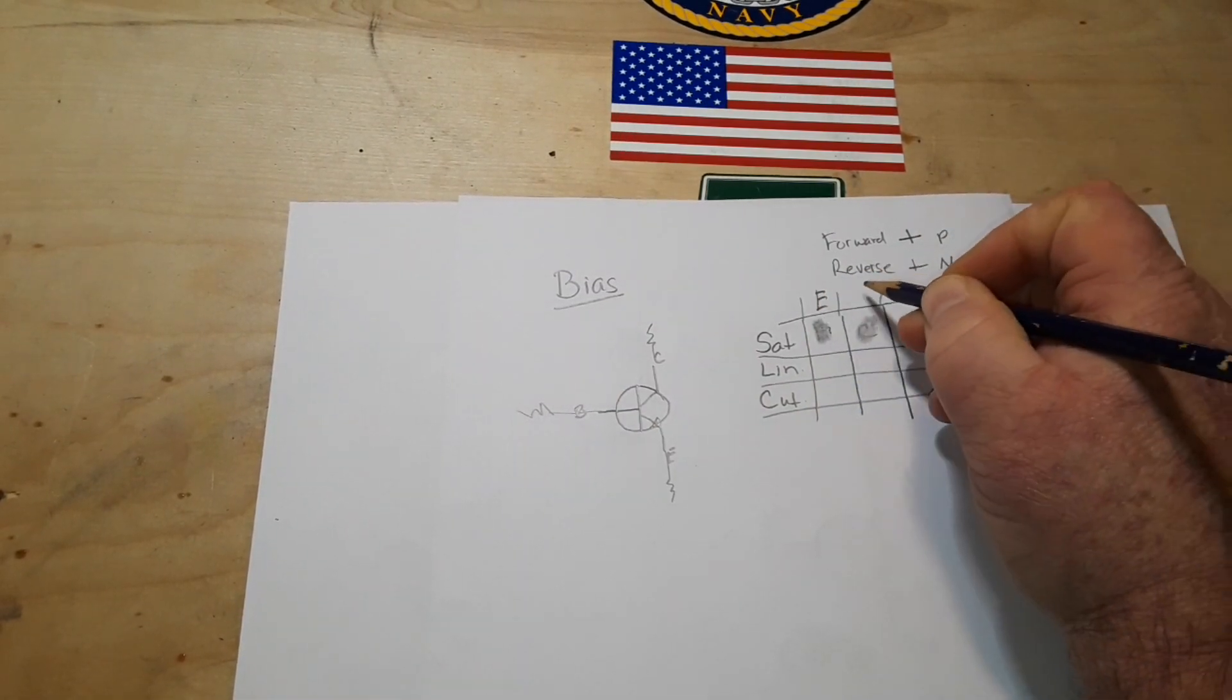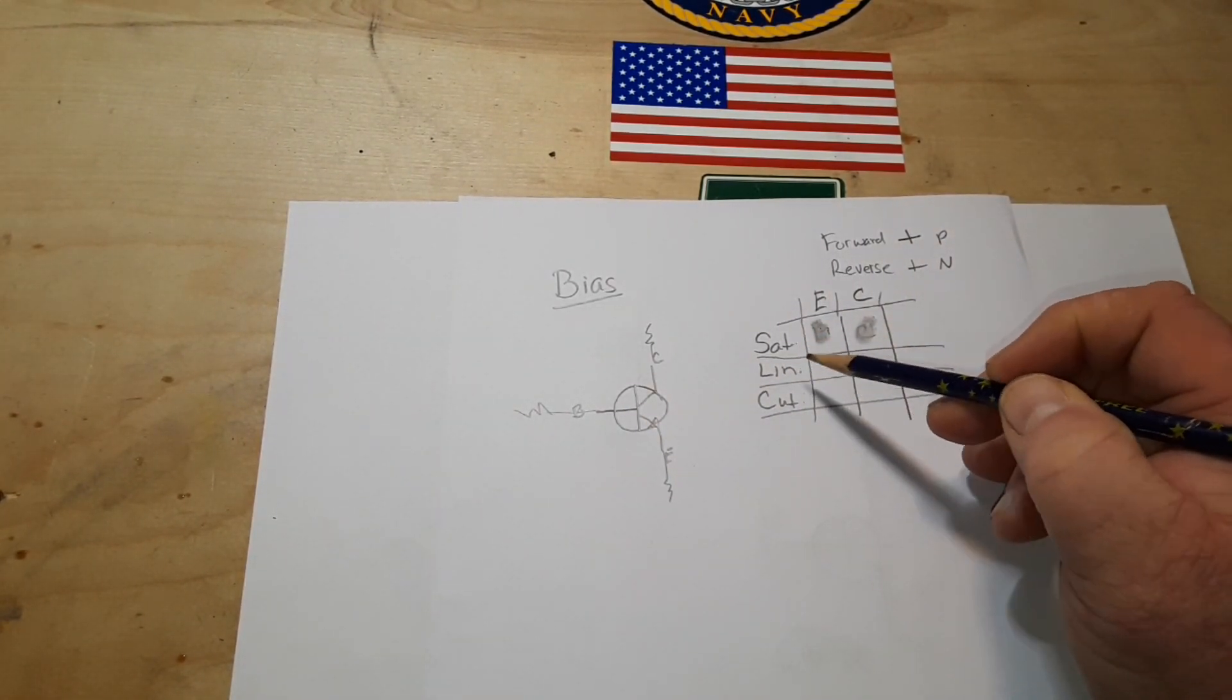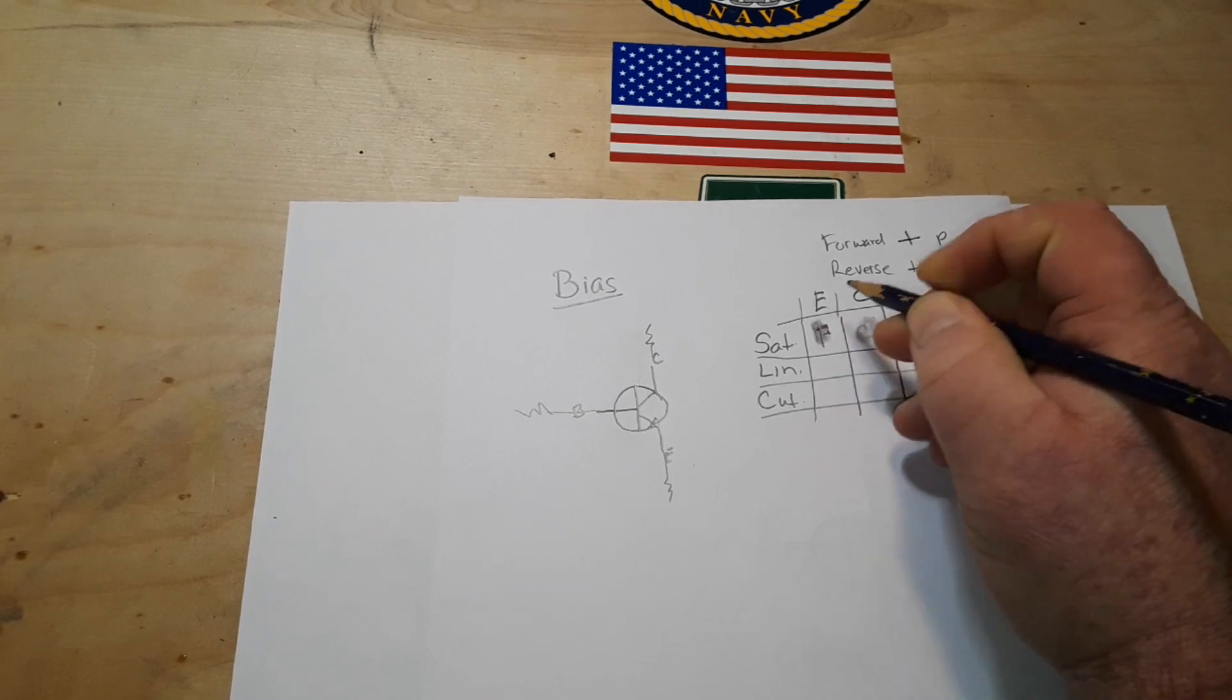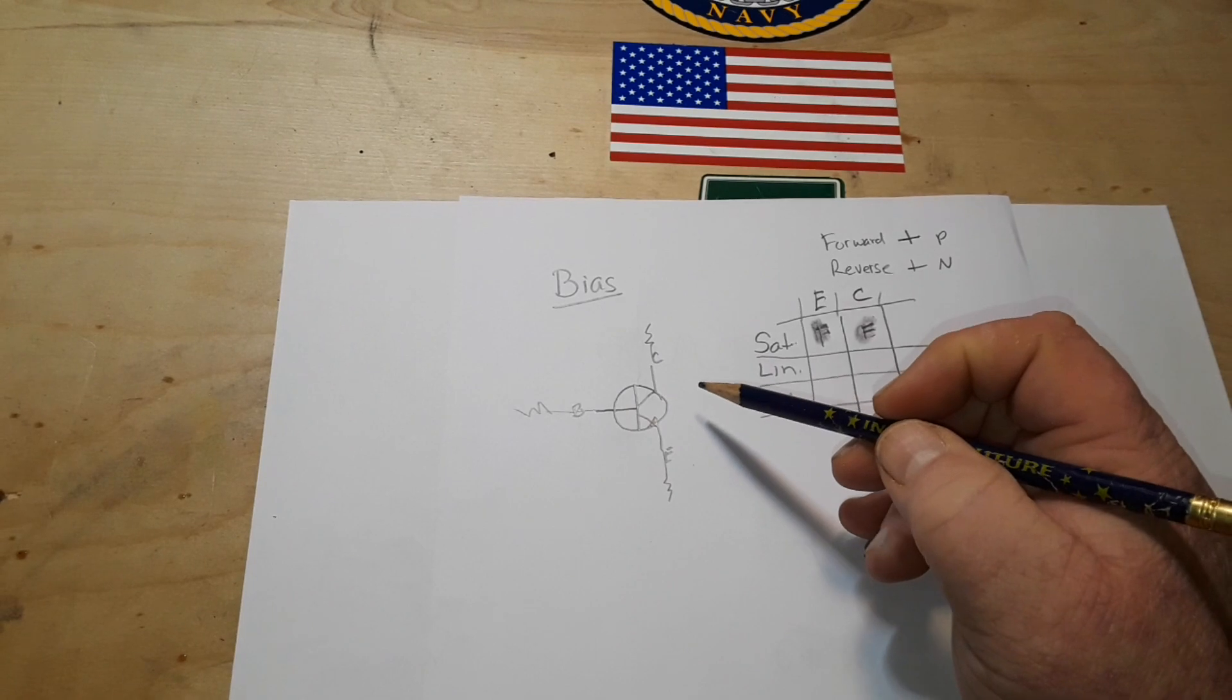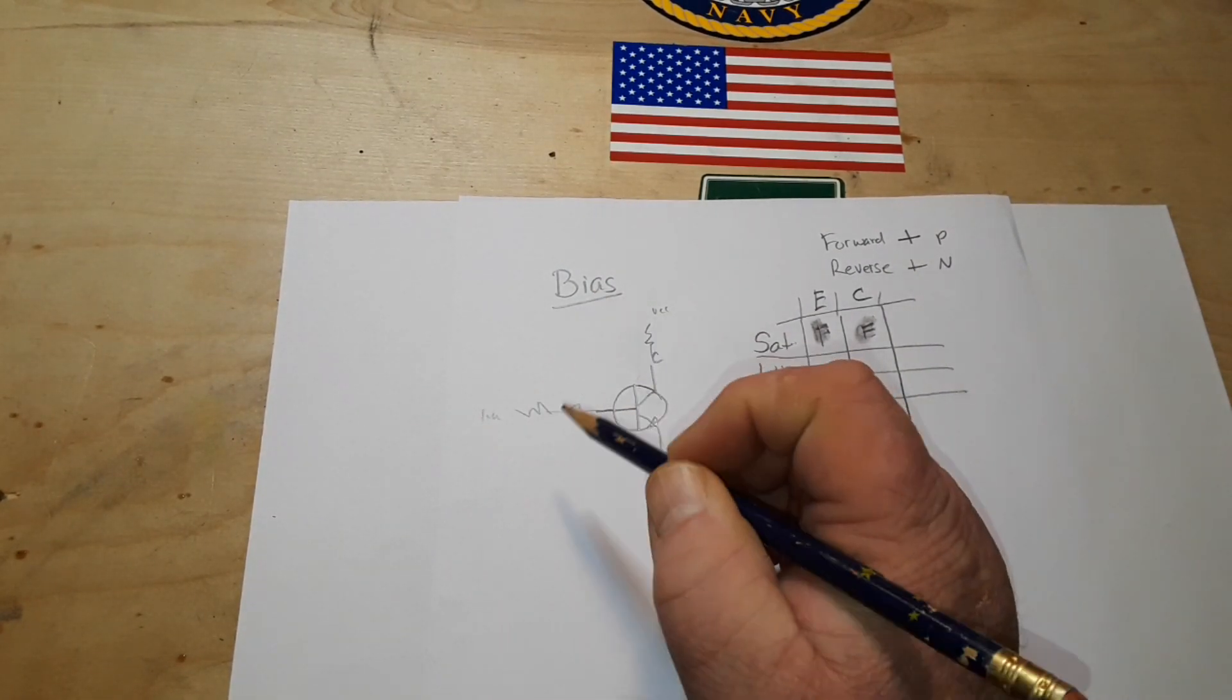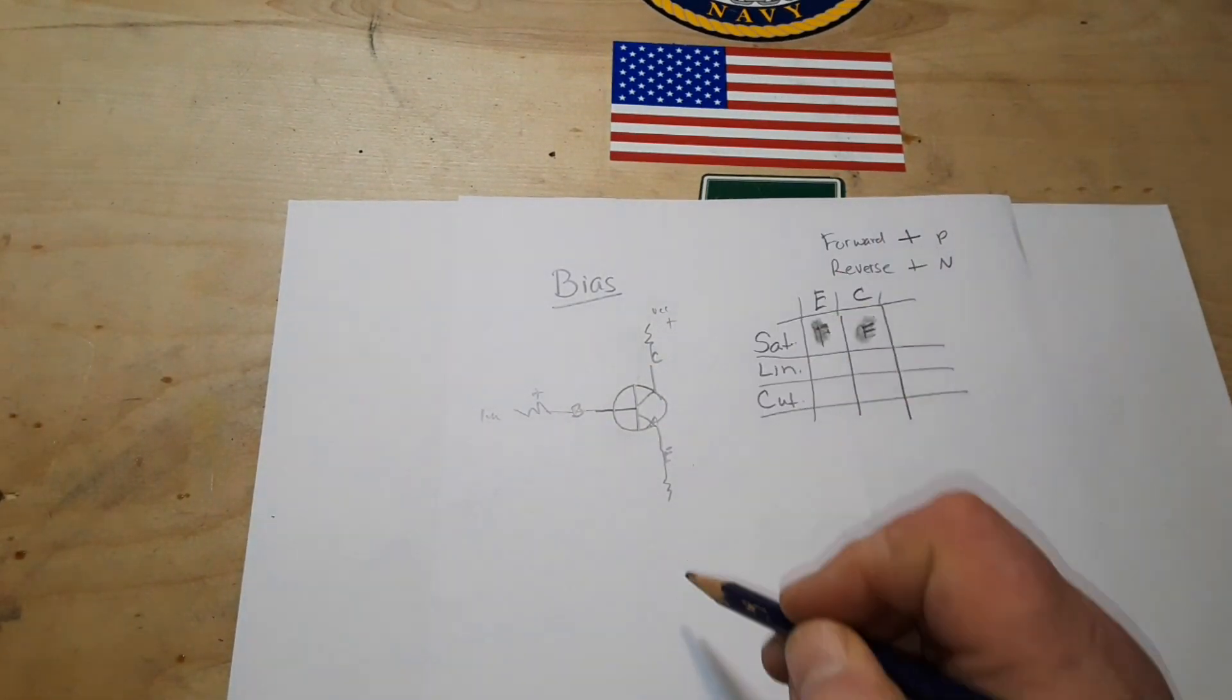This is our emitter junction, this is our collector junction. This is our saturation region, our linear region, and our cutoff region. In the saturation region both the emitter and the collector are forward biased. We have VCC here, then we have our input signal here. Both are forward biased, we are in the saturation region, we are completely open.